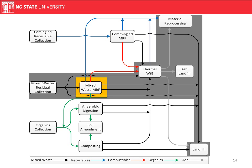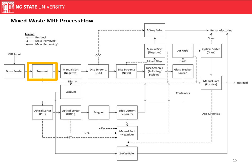Now we'll talk about mixed waste MRFs. A mixed waste MRF often comes from mixed waste residual collection and can be tied to a waste-to-energy facility or a landfill. The separated streams that come out often go to material reprocessing. The mixed waste MRF process flow diagram is identical to our single stream diagram, except there's a trommel located between the drum feeder and the initial manual sort. This trommel removes the organic fraction — specifically food waste — targeting materials smaller than two inches in diameter.